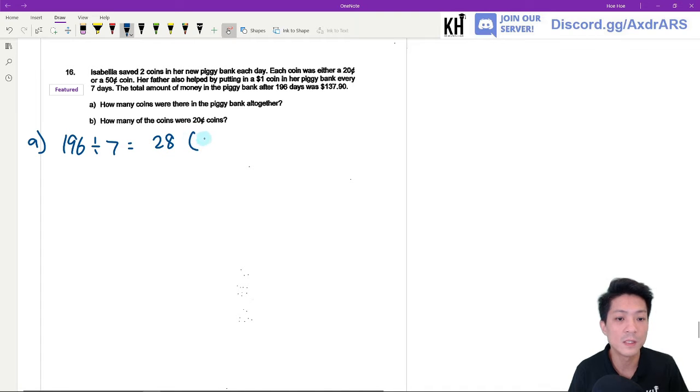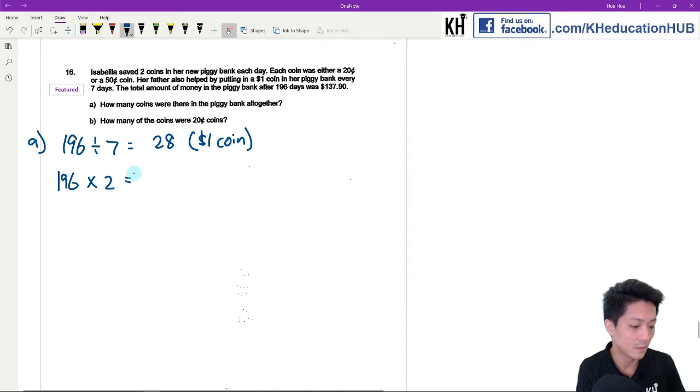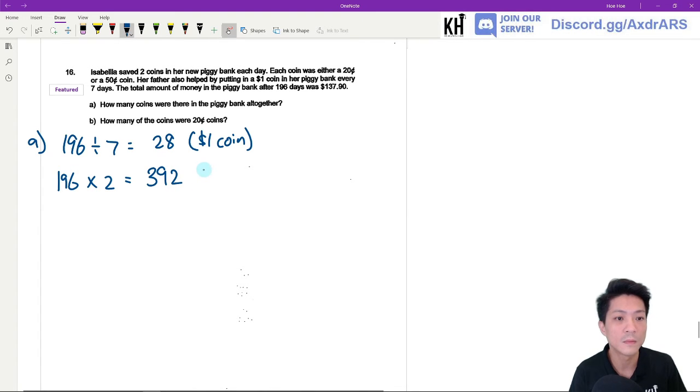Okay, 28. This is the number of one dollar coins. And Isabella saved two coins every day, which means that in 196 days she is going to put in 392 coins.